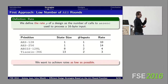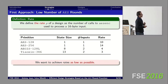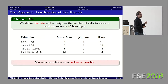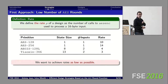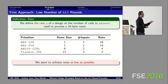An important concept is the rate: the number of AES calls used in the design to process one message block. For AES-128, the rate is 10 because it has 10 rounds and processes one block. AES-256 has rate 14. For Aegis, there are two inputs and eight AES calls, giving rate 4. For Tiaoxing, six calls with two inputs gives rate 3, which is smaller — that's probably why it achieves better performance. In our case we want to achieve rates as low as possible.